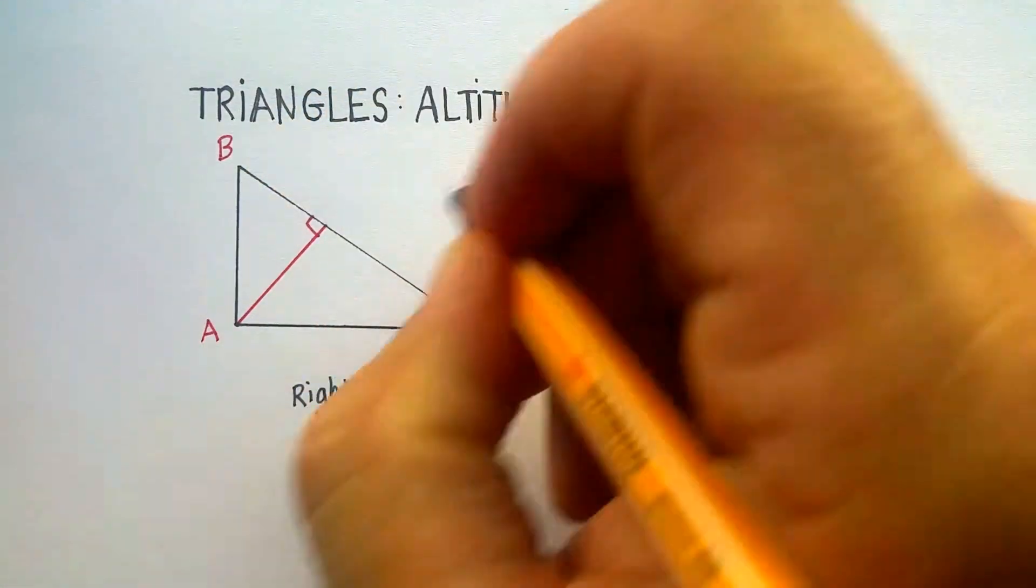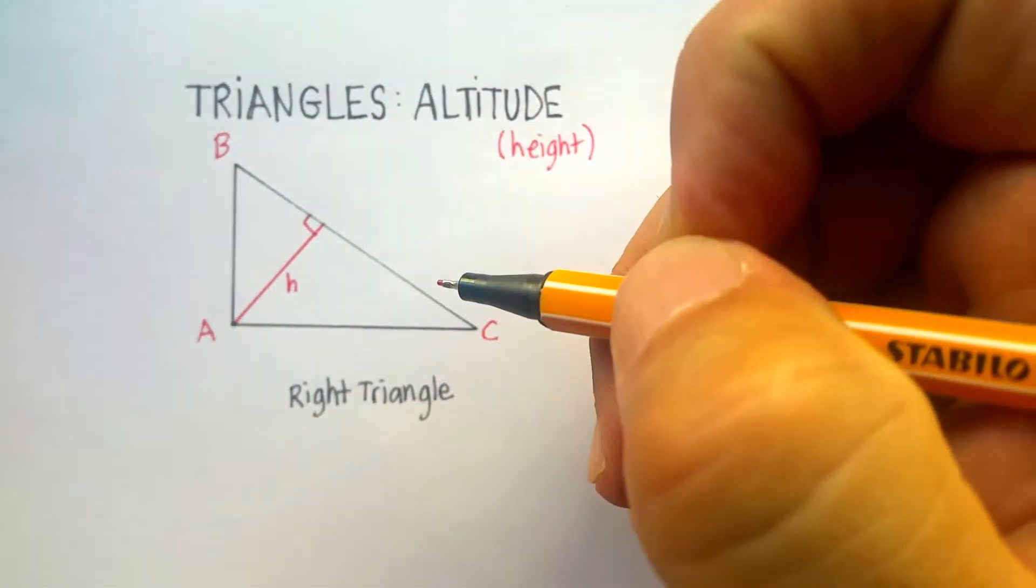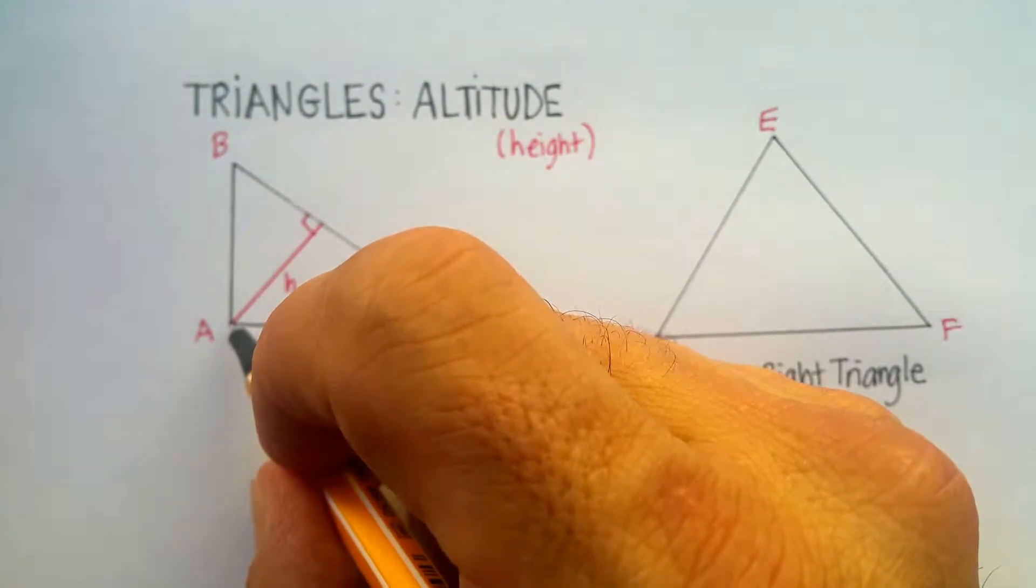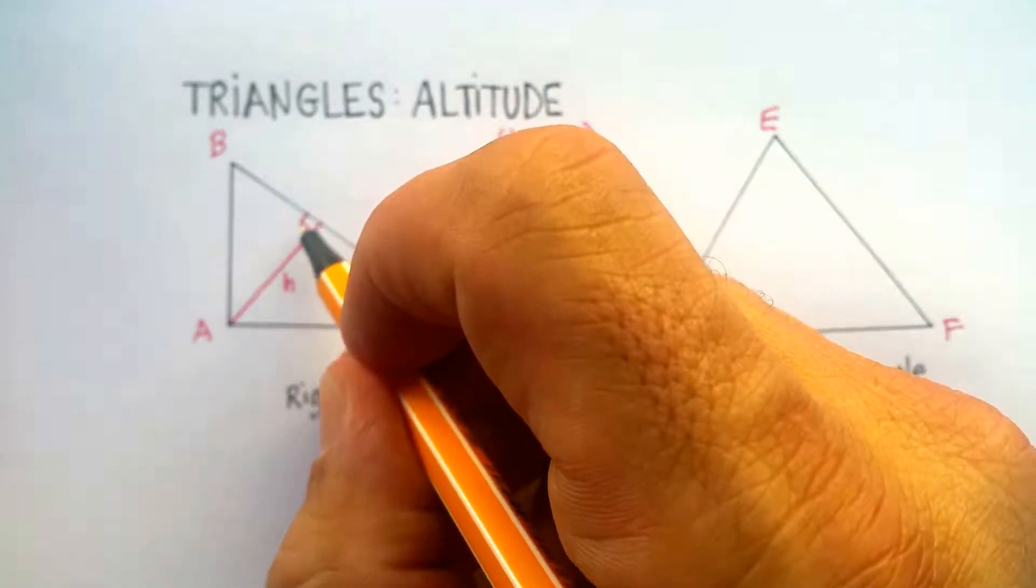It's also called a height, and it's normally indicated by the small letter h. So again, it goes from a vertex to the opposite side and creates a 90-degree angle.